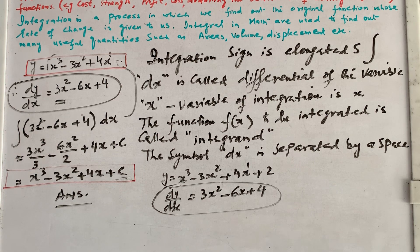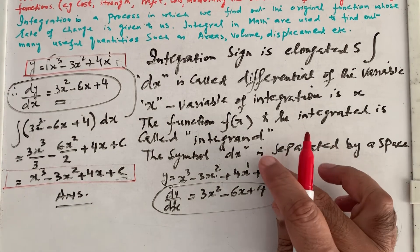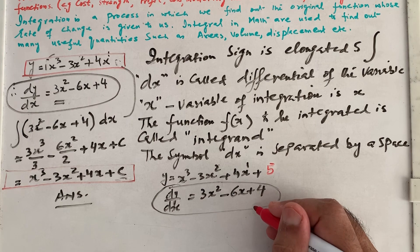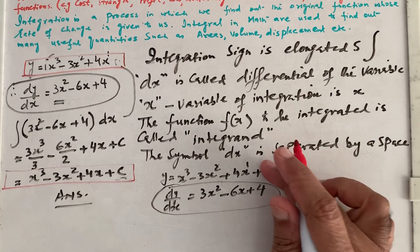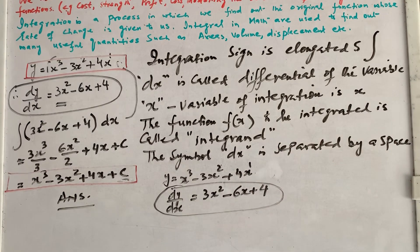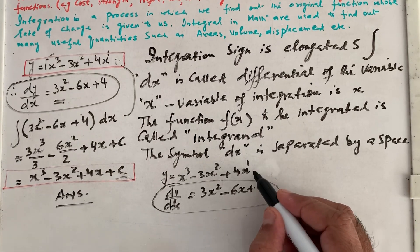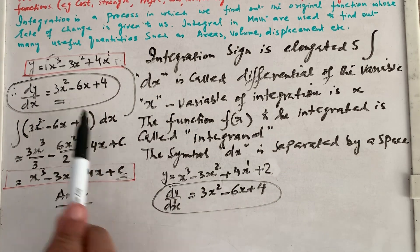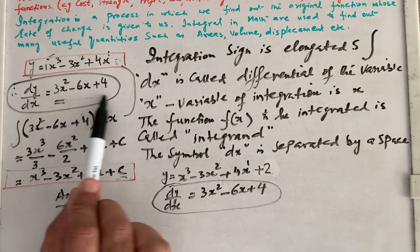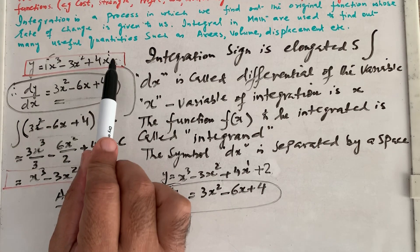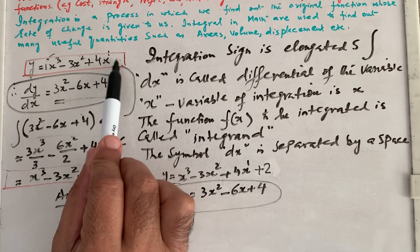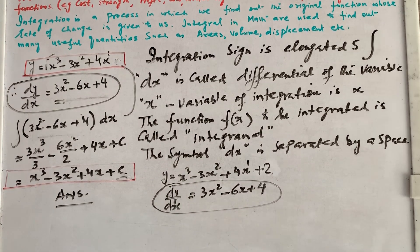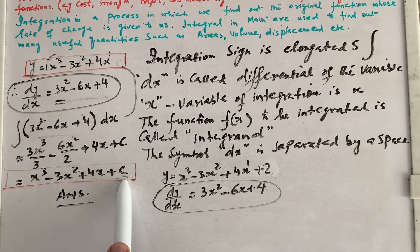Hope you understand. In other words, whether the original function had plus 2, plus 5, minus 5, or any constant, the differentiation dy/dx remains the same. So when integrating, we must account for that unknown constant which does not affect the derivative. Therefore, we put the constant of integration C. Thank you.